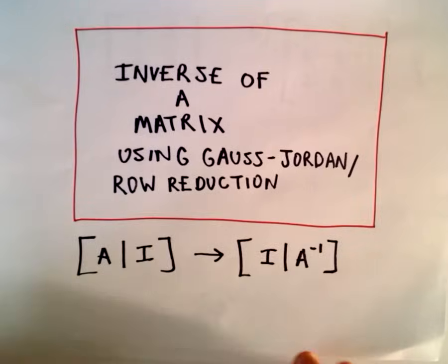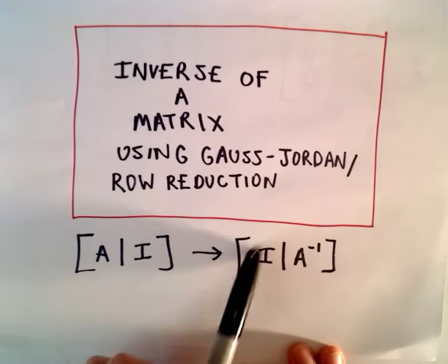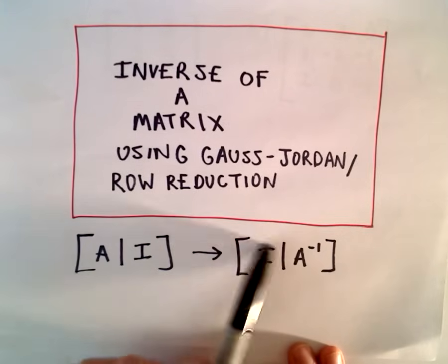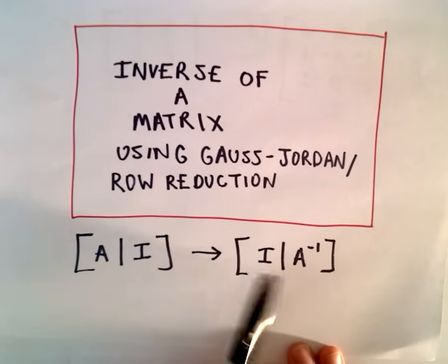So, I guess one remark, recall not all square matrices have inverses. So, if you're unable to produce this identity matrix on the left side, if you can't produce the identity matrix, it means you've got a matrix that has no inverse.